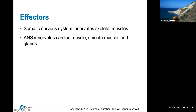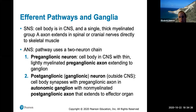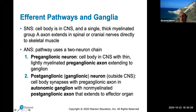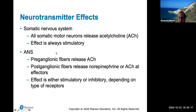As a review, the somatic nervous system innervates skeletal muscles, while the ANS innervates cardiac, smooth muscle, and glands — anything under subconscious control. The somatic nervous system has a cell body in the CNS and a single thick myelinated group-A axon. The ANS pathway uses a two-neuron chain: a preganglionic neuron with a cell body in the CNS and a myelinated axon extending to the ganglion where a synapse occurs. The ganglion holds the cell bodies of these neurons.